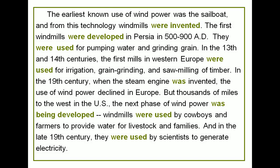But thousands of miles to the west, in the U.S., the next phase of wind power was being developed. Windmills were used by cowboys and farmers to provide water for livestock and families. And in the late 19th century, they were used by scientists to generate electricity.